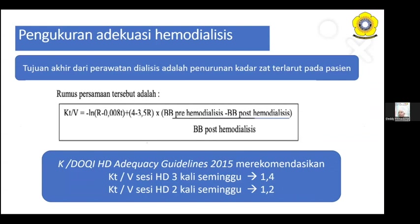Ini pengukuran adekuasi hemodialisis. Yang sering kita gunakan adalah rumus KT/V, di mana rumusnya sudah baku: minus LN(R) per 0,08 ditambah 4, kurang 3,5R, dikali berat badan pre-hemodialisis dikurang berat badan post-hemodialisis, dibagi BB post-hemodialisis. Berdasarkan KDOQI guideline 2015, direkomendasikan pada pasien dengan HD 3 kali seminggu KT/V-nya adalah 1,4, dan pada pasien dengan hemodialisis 2 kali seminggu KT/V yang diharapkan adalah 1,2.